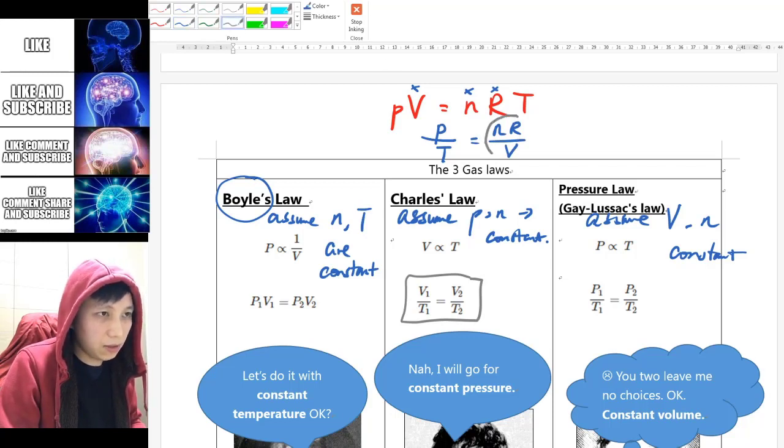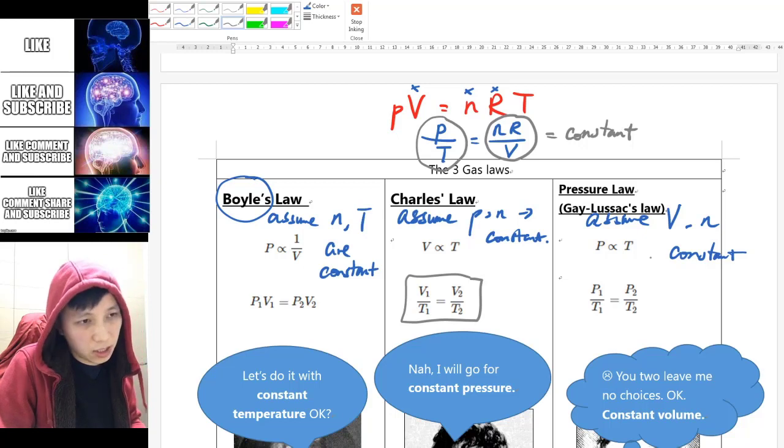And so again, these three, each of them are constant. Therefore when they multiply, it is also a constant. And therefore the ratio of P over T would also be a constant here at one time to another time.